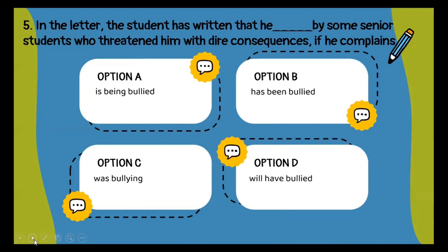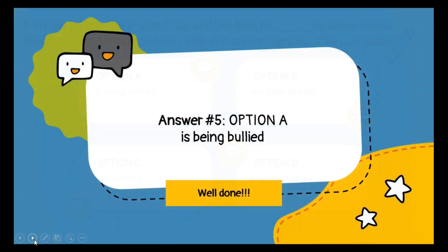Moving on to the fifth type of question: in the letter, the student has written that he dashed by some senior students who threatened him with dire consequences if he complains. This is a sentence in active-passive voice. The correct option is option A: is being bullied.